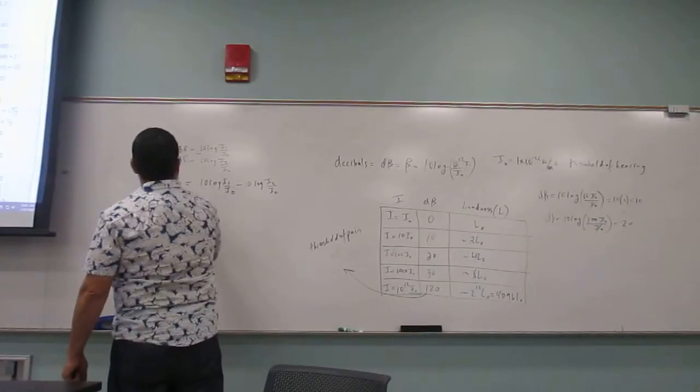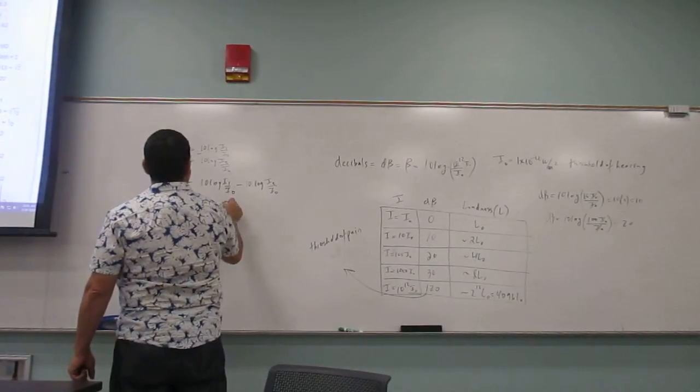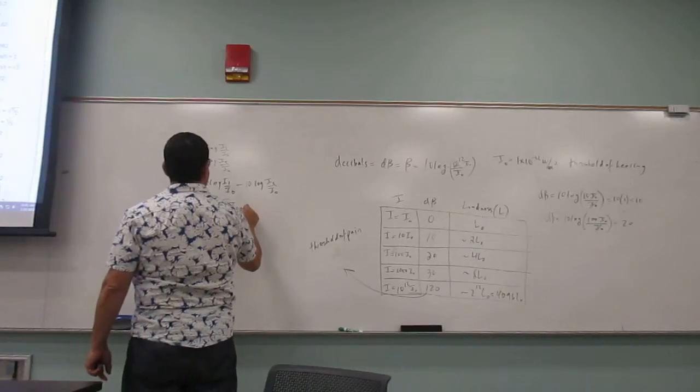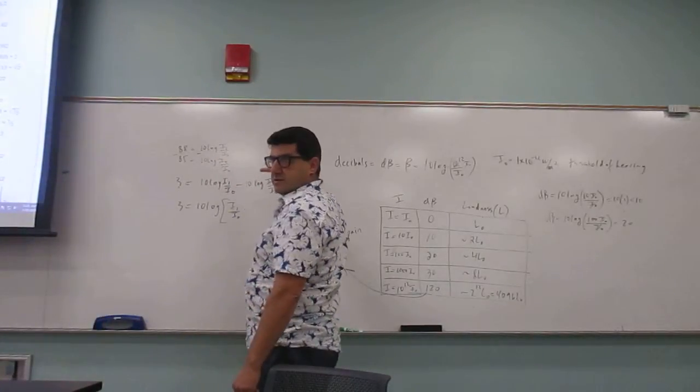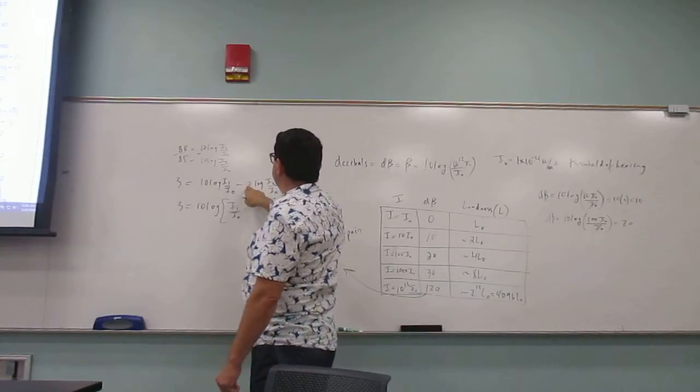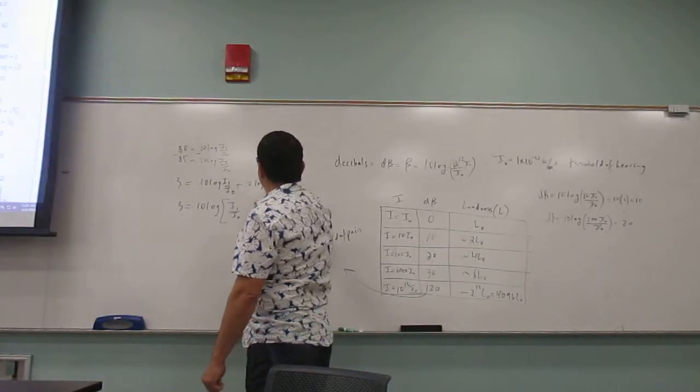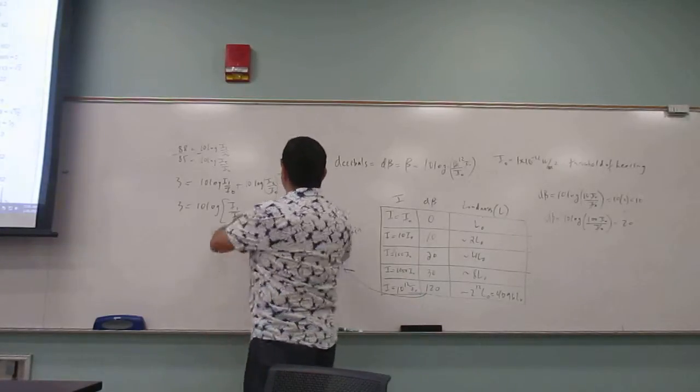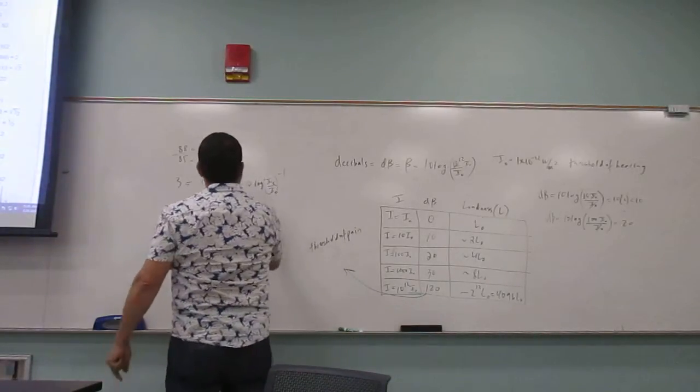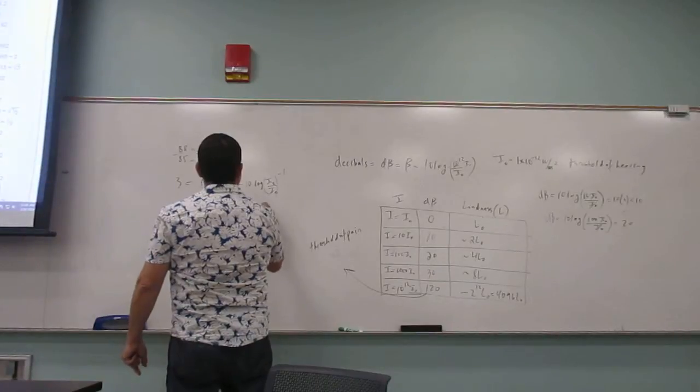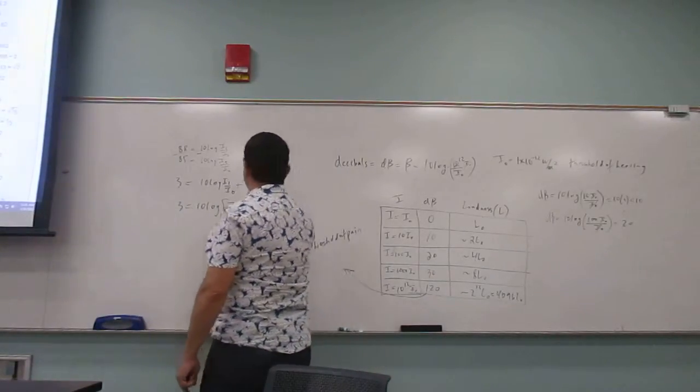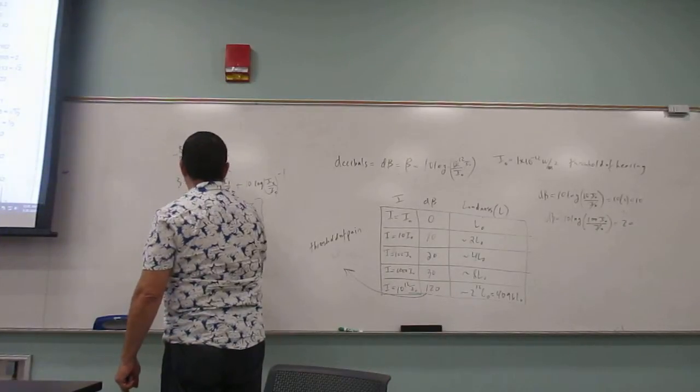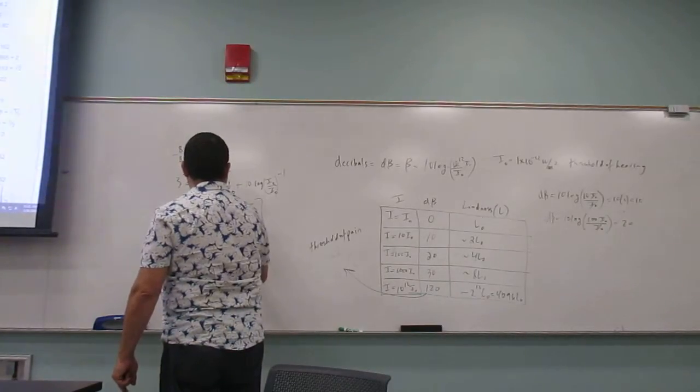And then how do you subtract logs? By multiplying by the reciprocal of this, right? Because minus log is the same as plus log to the negative one power. So then you have here, reciprocate it, and then multiply it. And i0, i0 cancels. So then you have three is equal to 10 log of i1 over i2.